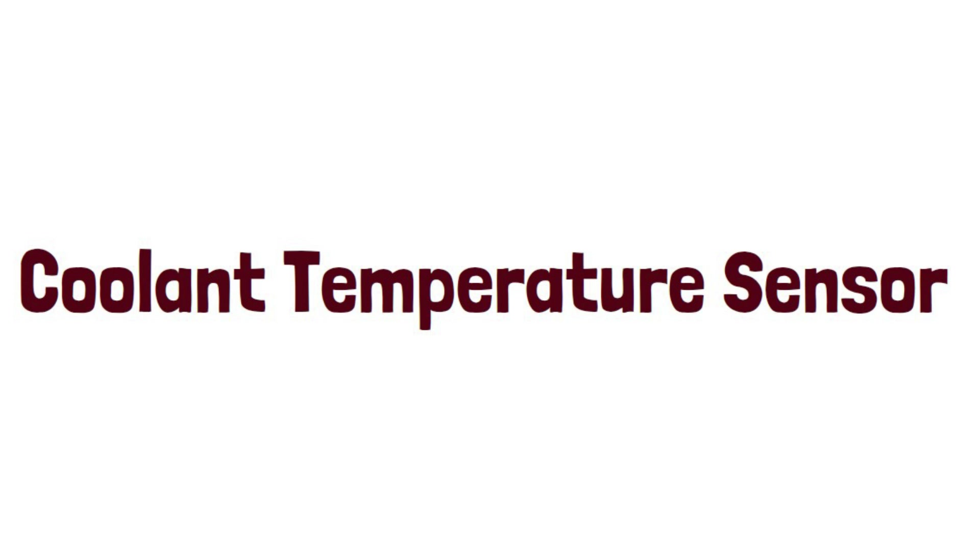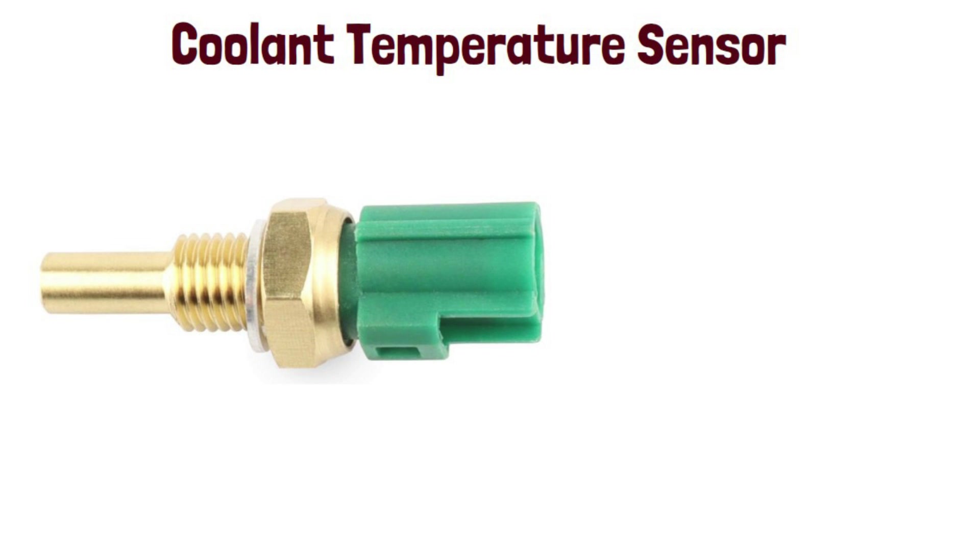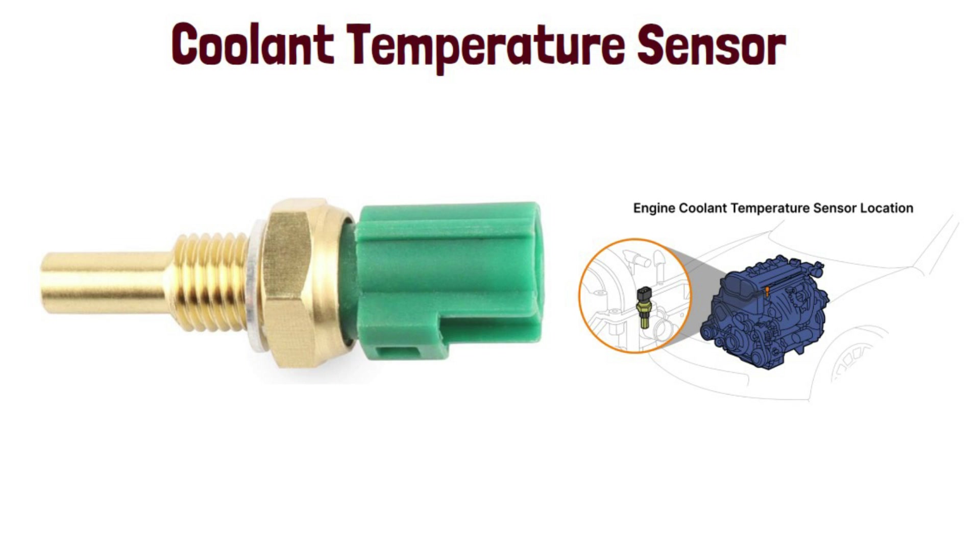The Engine Coolant Temperature Sensor is used to measure the temperature of the engine coolant. The readings from this sensor are then fed back to the engine control unit. This data from the sensor is then used to adjust the fuel injection and ignition timing.